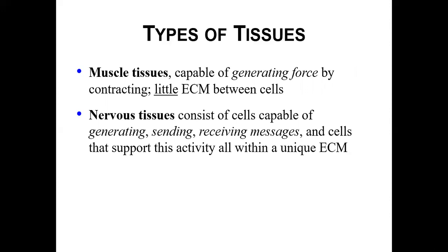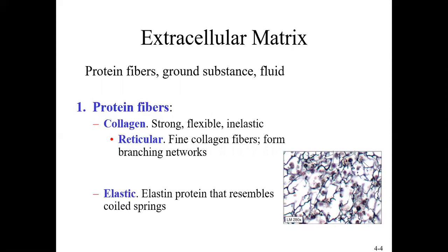The fourth main tissue type is nervous tissue. These are specialized cells that have the ability to generate information — messages we call action potentials — and to send and receive those messages. Nervous tissue has a specific type of extracellular matrix surrounding it that we'll look at later in the chapter. We've been mentioning extracellular matrix, so let's look at that first before going back to each tissue type.